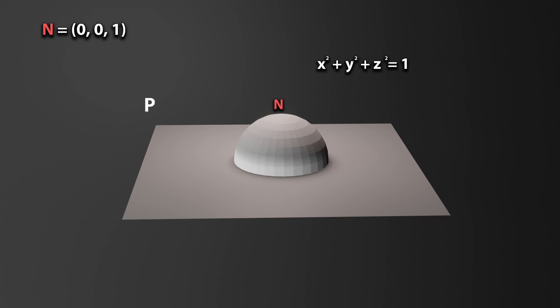Now, for any point p on M, there is a unique line through the north pole n at p, and this line intersects the equatorial plane in exactly one point, p prime, known as the stereographic projection of p onto the plane.